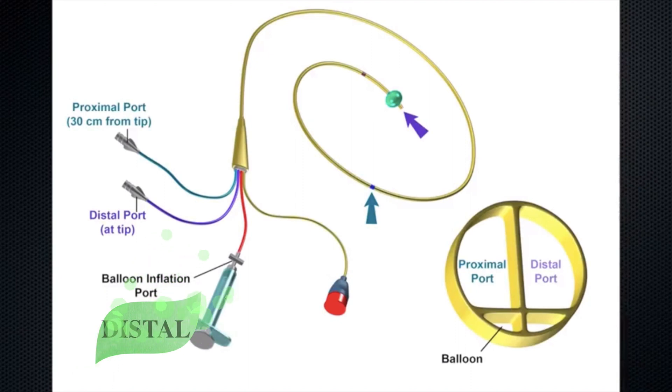The red port is the balloon port. It is used to inflate the balloon in the distal pulmonary artery, and comes with a locking guard and a pre-calibrated 1.5ml syringe. Do not replace the syringe with a regular syringe.